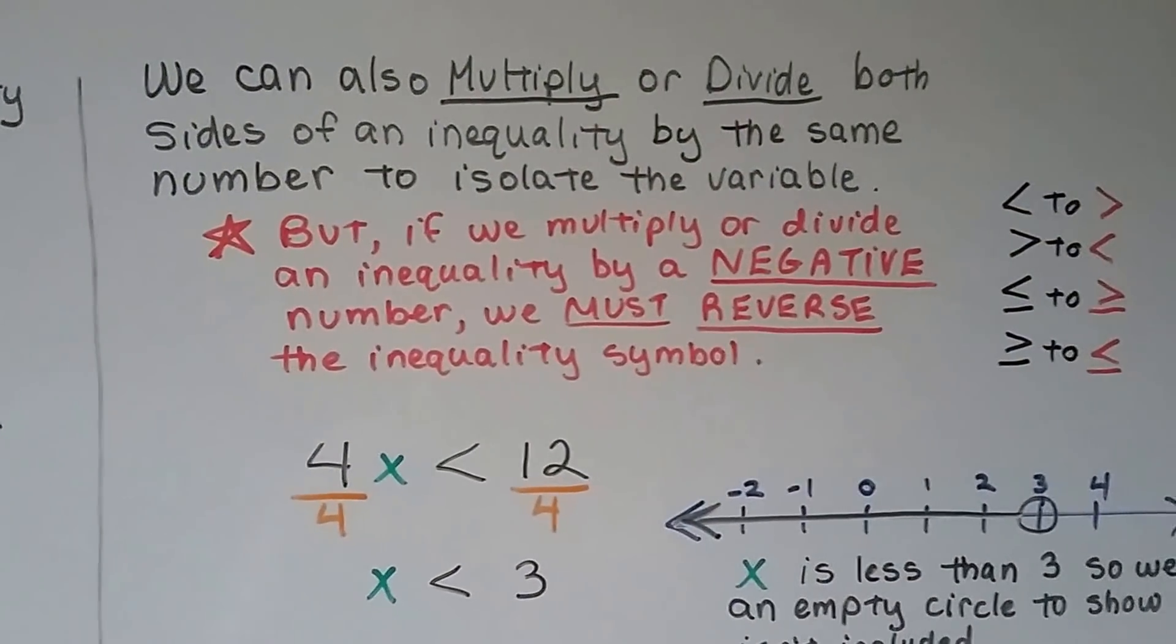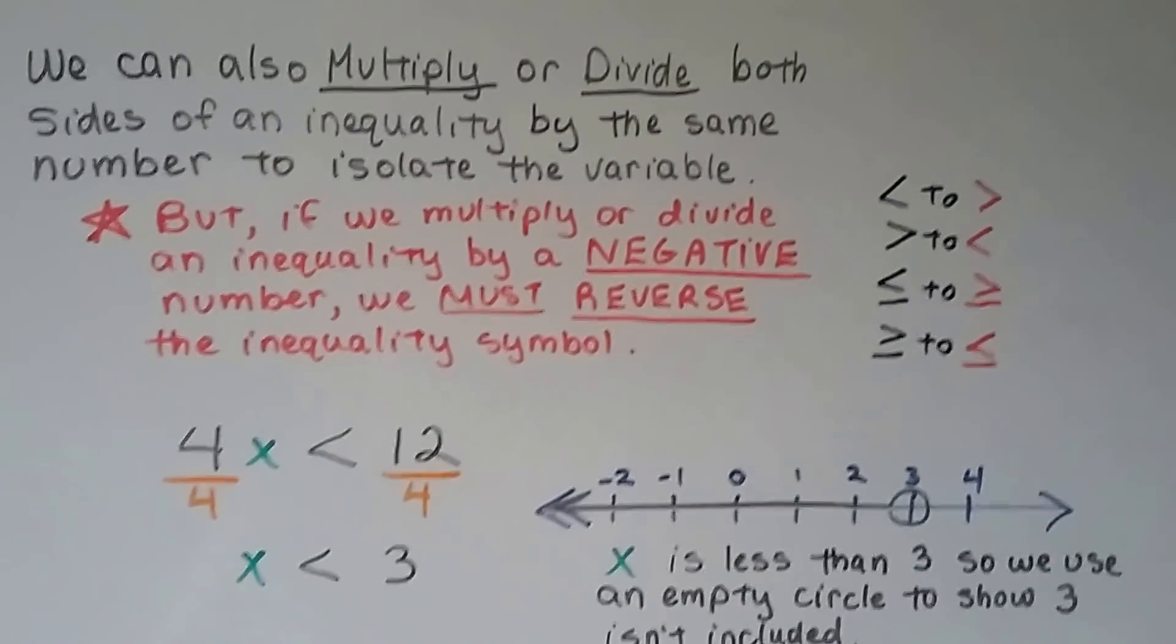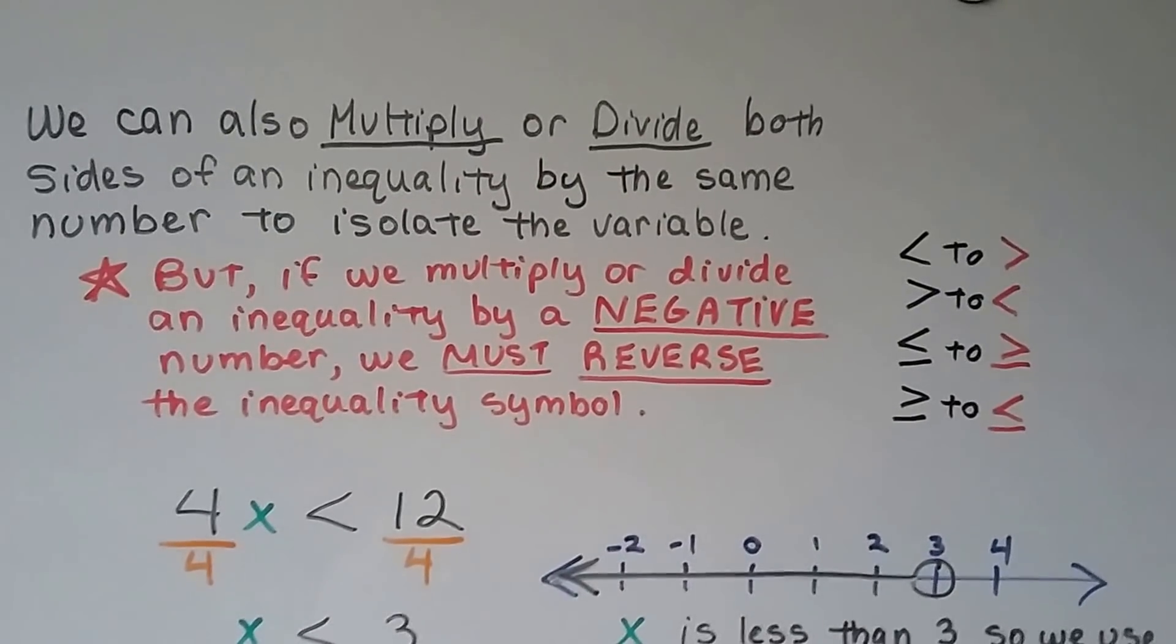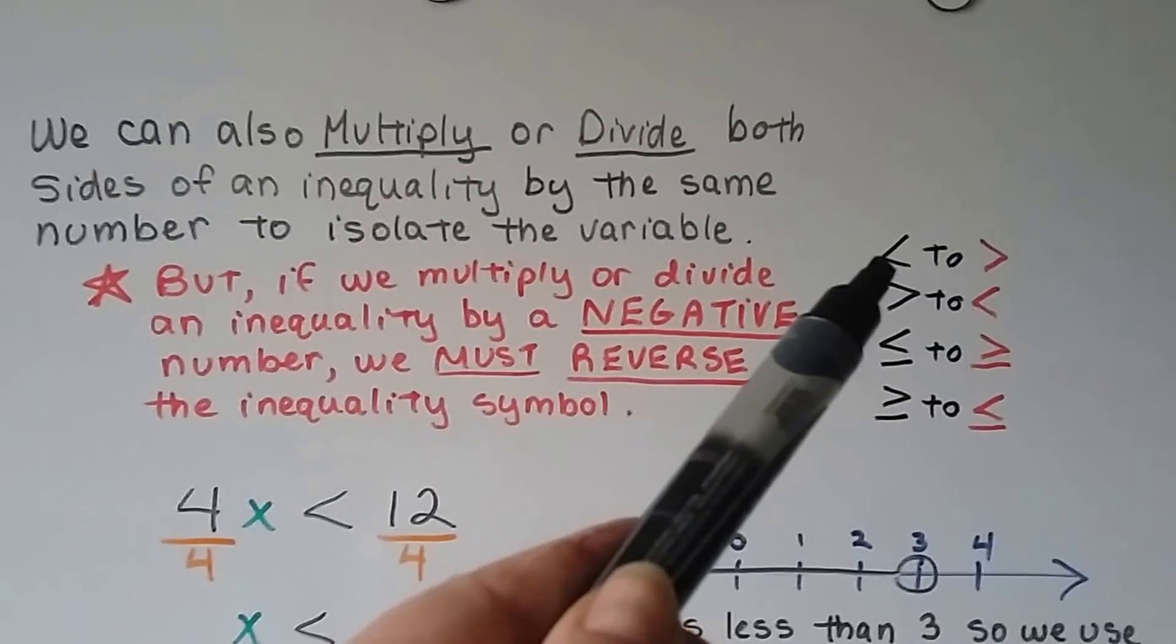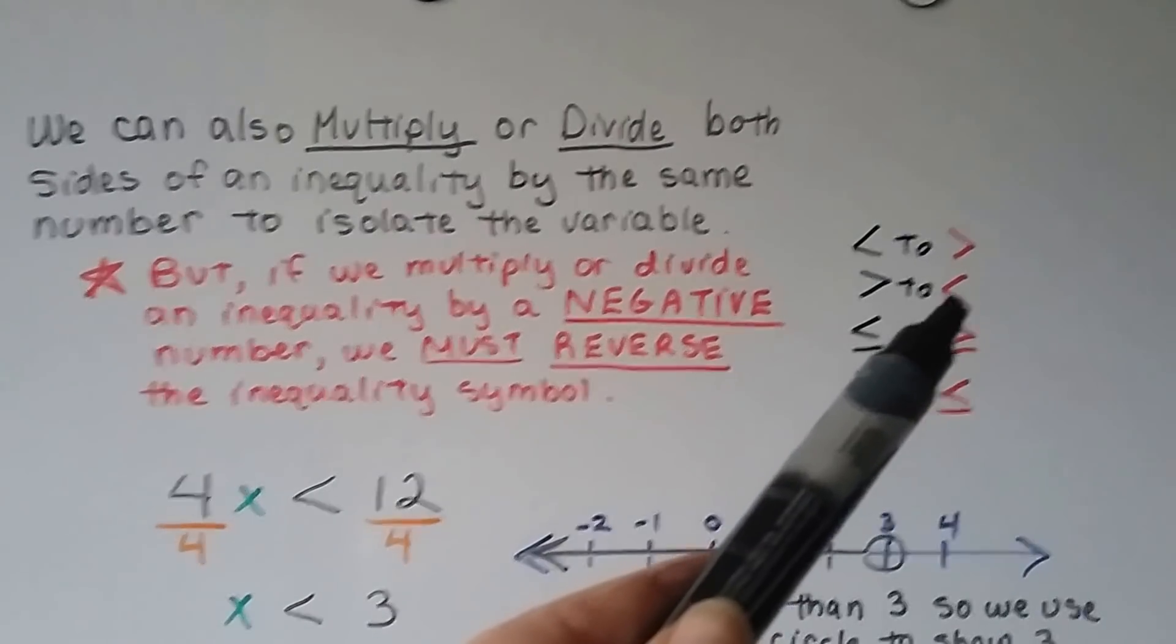We can also multiply or divide both sides of an inequality by the same number to isolate the variable. But if we multiply or divide an inequality by a negative number, we must reverse the inequality symbol. So if it's going like this, we have to flip it to like this. If it's like this, see how it's reversed?